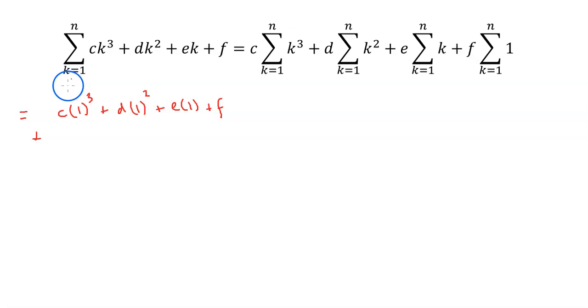And then we would do the next one, 2. So it would be c times 2 cubed plus d times 2 squared plus e times 2 plus f.